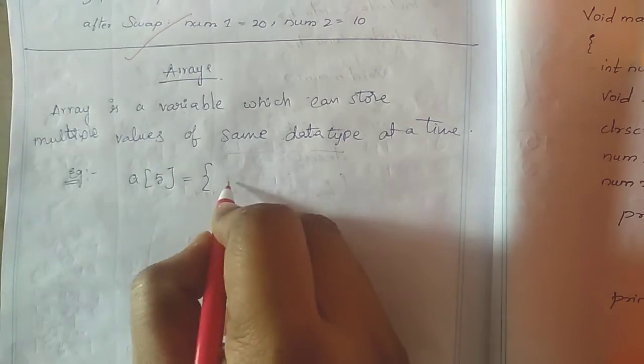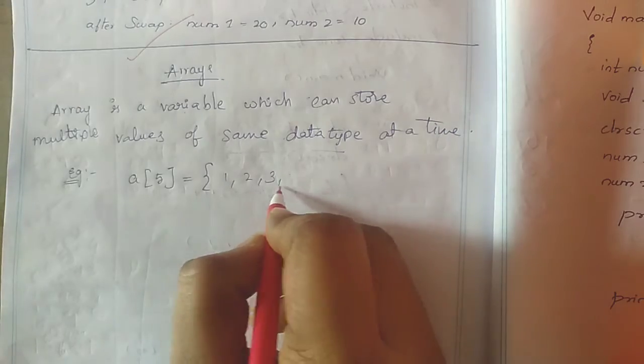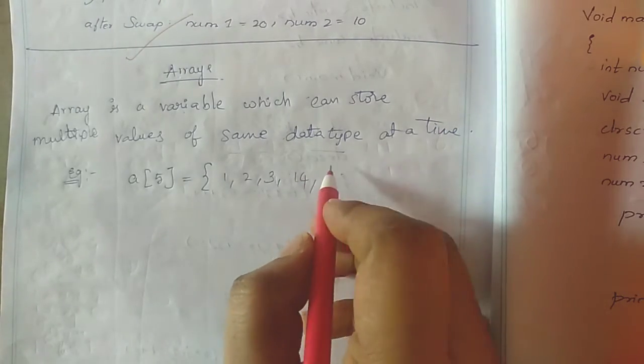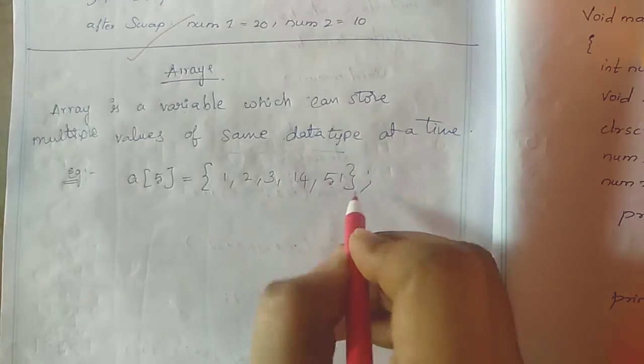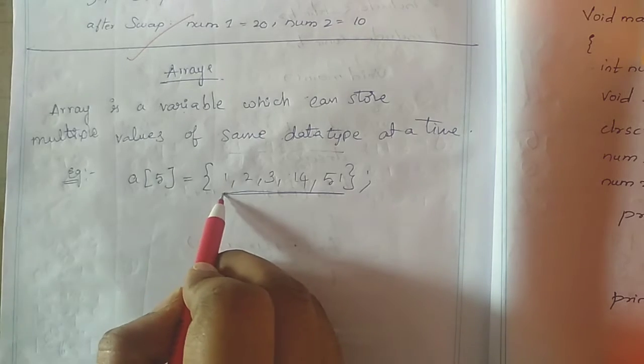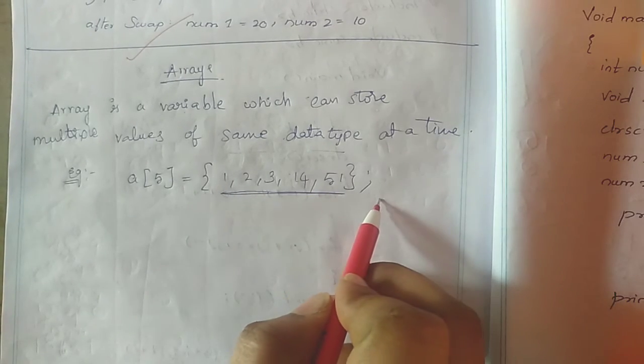It takes 1, 2, 3, 40, 14, 51. All these elements are integers.